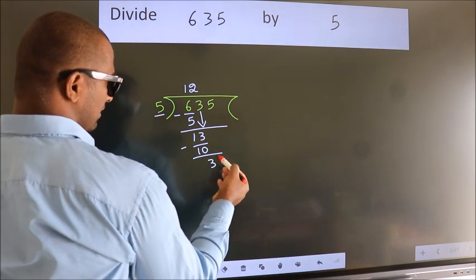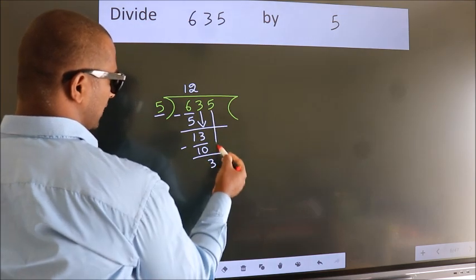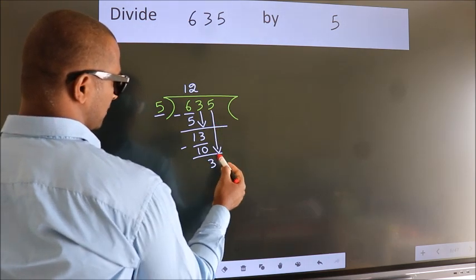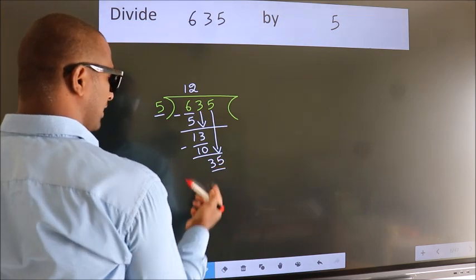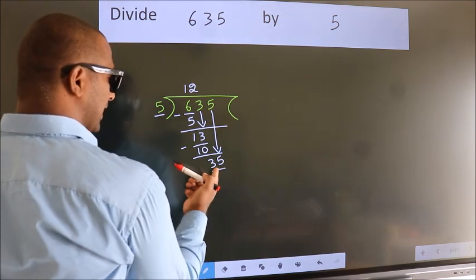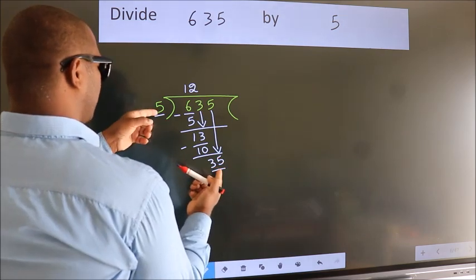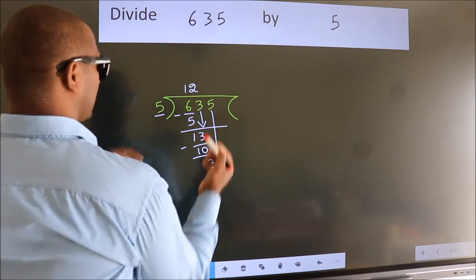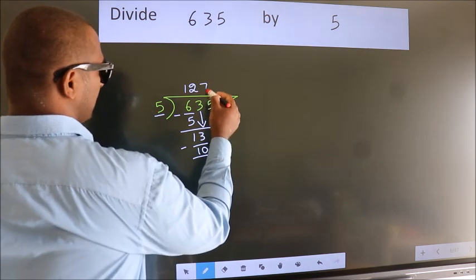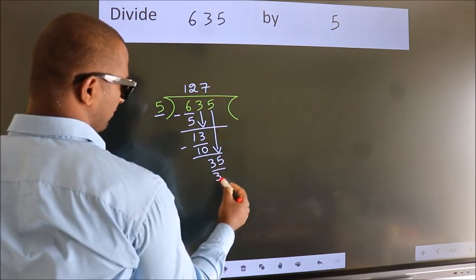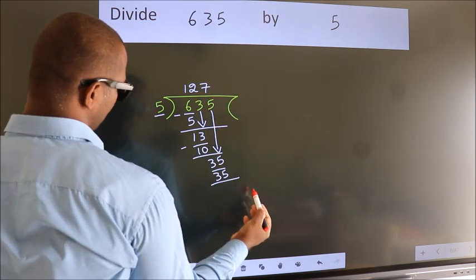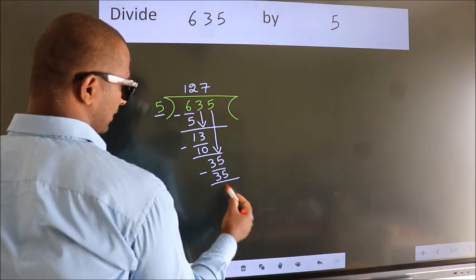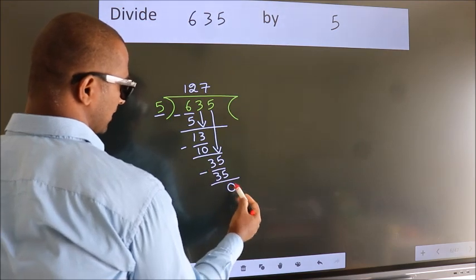After this, bring down the beside number. So, 5 comes down, giving us 35. When do we get 35 in the 5 table? 5 sevens is 35. Now we subtract — we get 0.